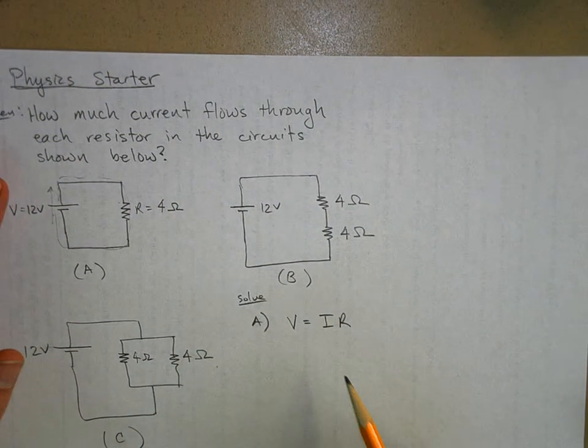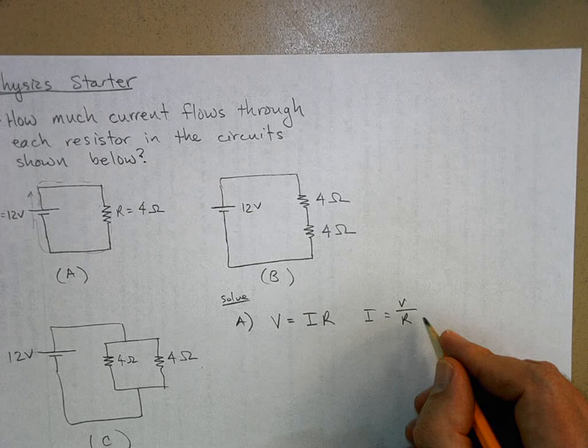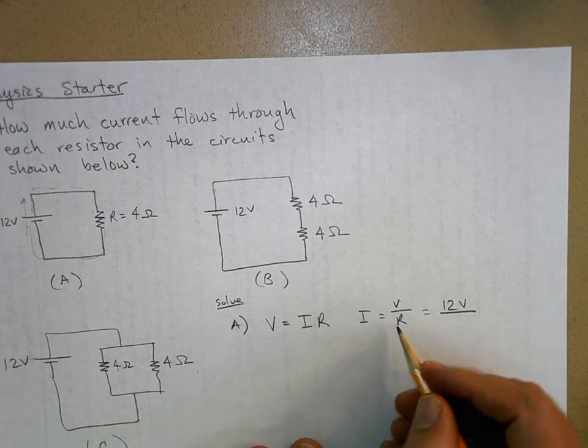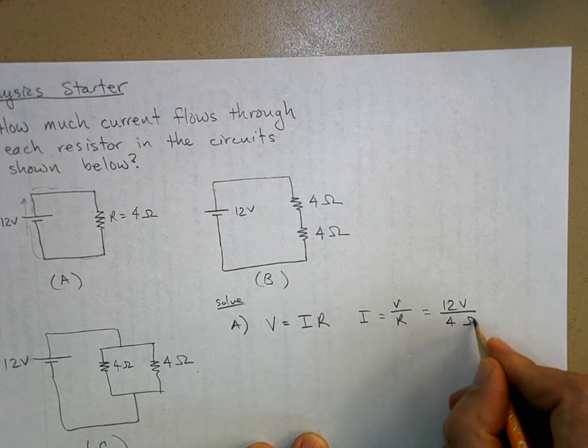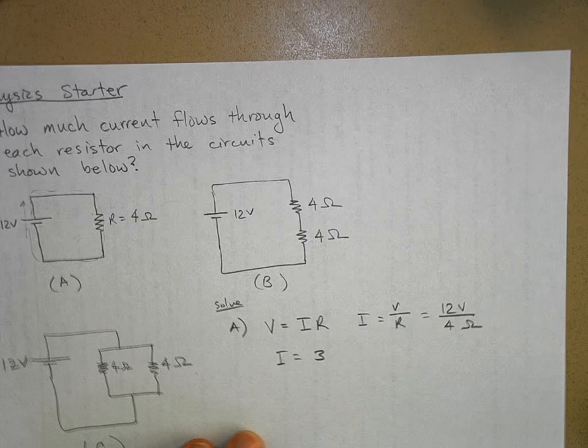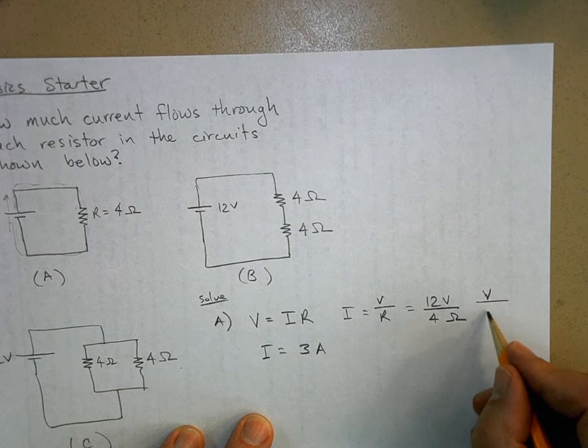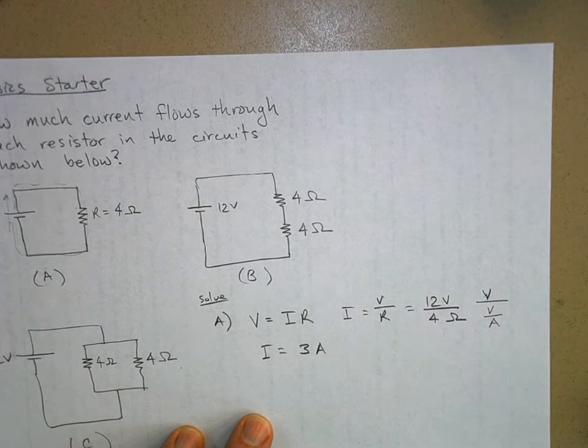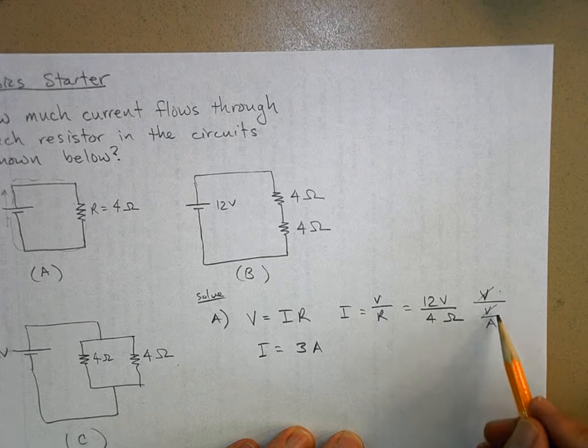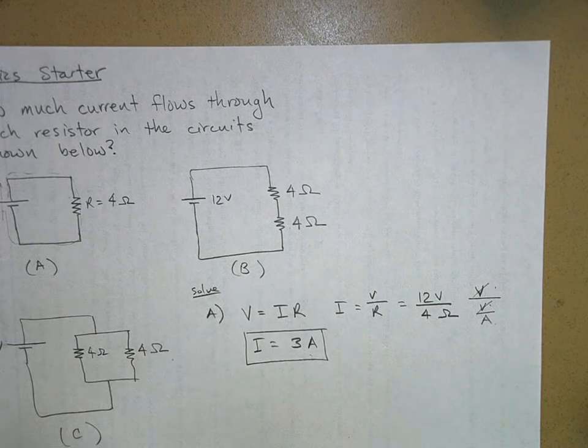So V equals IR, and we want to find I, so I equals V over R. This is just 12 volts over 4 ohms, so I equals 3 - what's a volt divided by an ohm? It's an amp. Because remember, what is an ohm? This is like saying a volt divided by a volt per amp. An ohm is how much voltage you need to get one amp of current to flow through something. So the volts cancel, you get amps. I'll only bug you about that a hundred times.